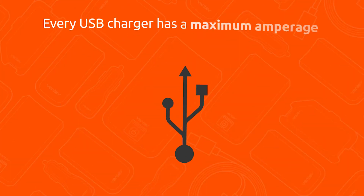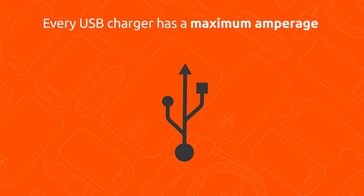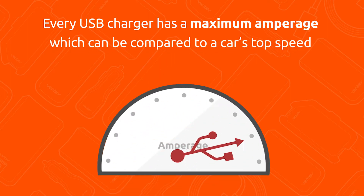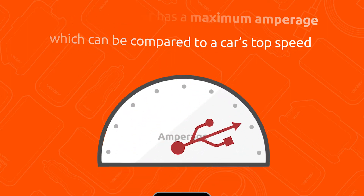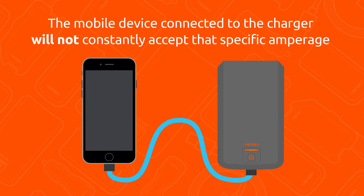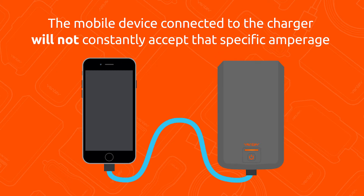Hi, it's Dave coming at you from Venta Mobile here today to explain the two interwoven modes of charging a mobile battery, also known as the charging curve. Every USB charger has a maximum amperage, which can be compared to a car's top speed. However, the mobile device connected to the charger will not constantly be accepting that specific amperage, despite the charger's potential.